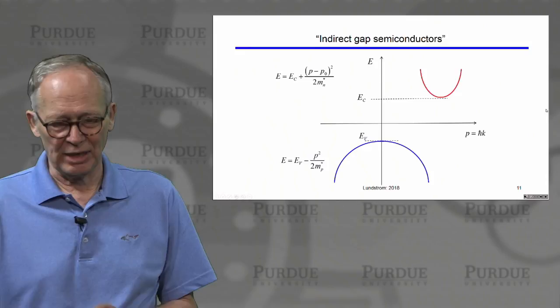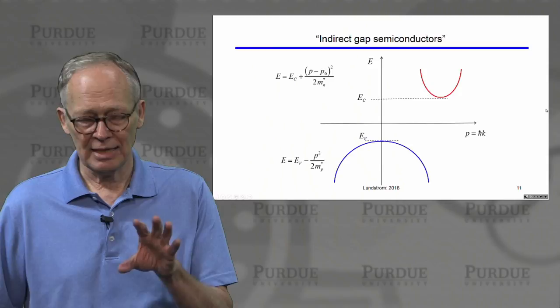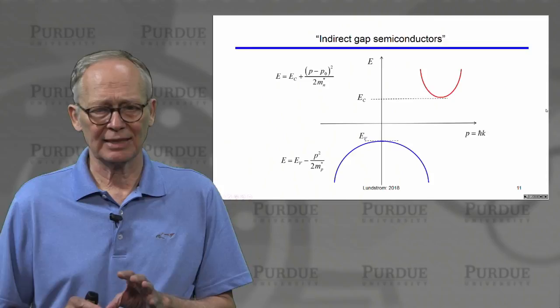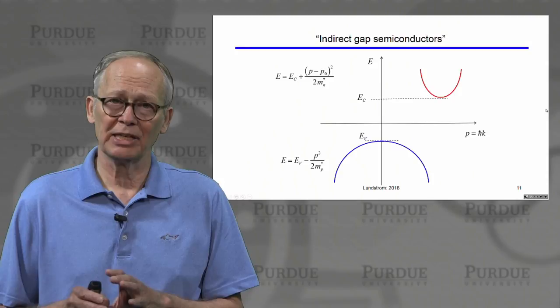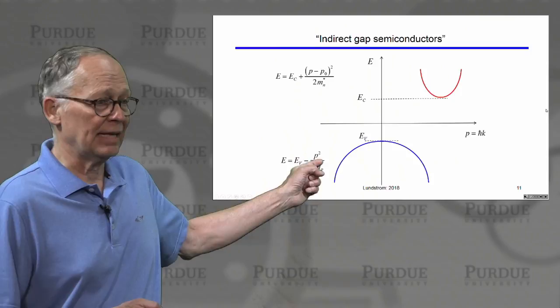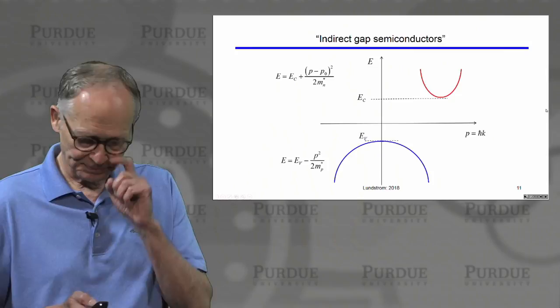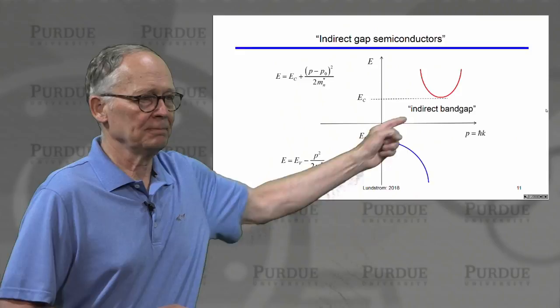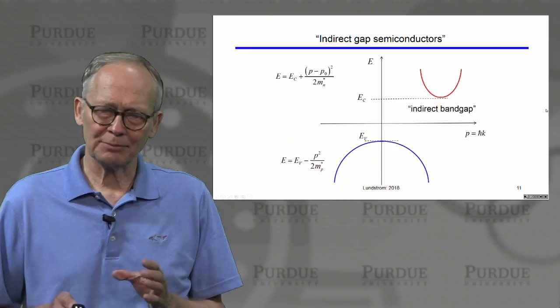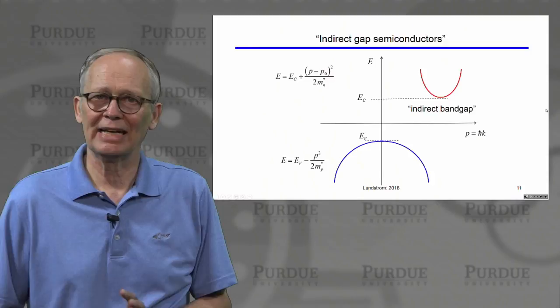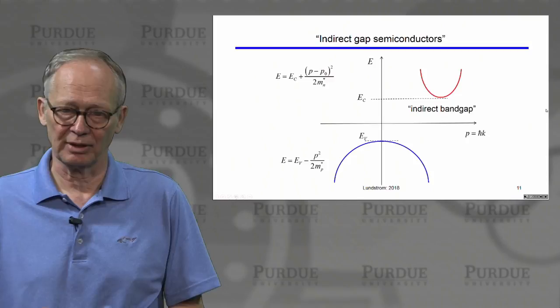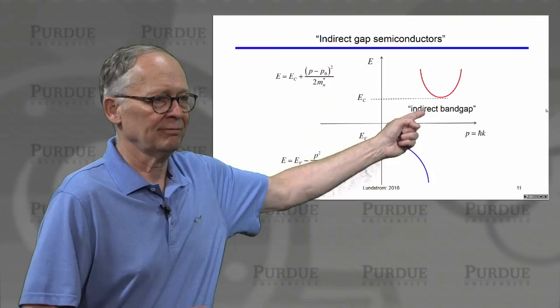There are also indirect gap semiconductors, like silicon. In an indirect gap semiconductor, the minimum of the conduction band and the maximum of the valence band occur at different momenta. This makes it particularly difficult for electrons and holes to recombine in a way that gives off light — they tend to recombine giving off heat rather than light.